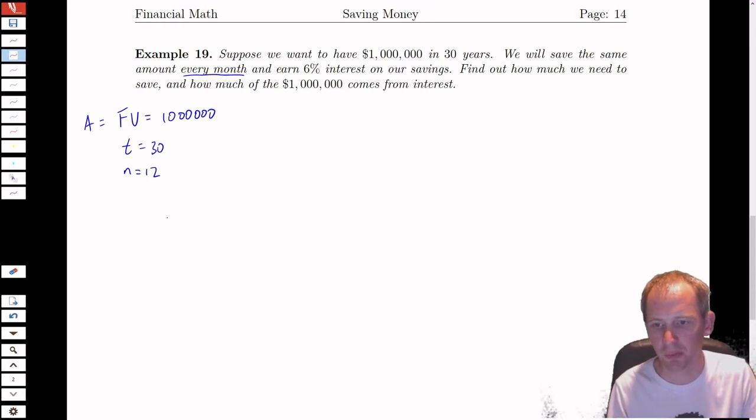If it says we're saving the same amount every year, it would be 1. Every quarter, then n would be 4. So that's what indicates our little n. We're going to get 6% interest on our savings, so the interest percentage is 6.